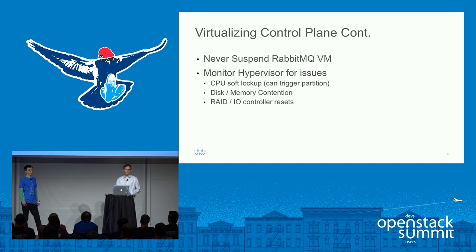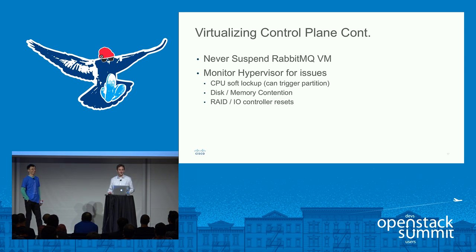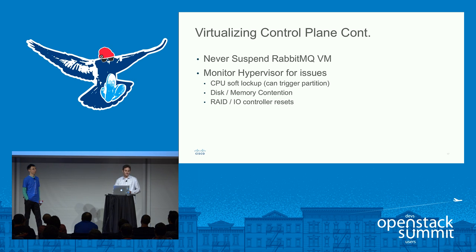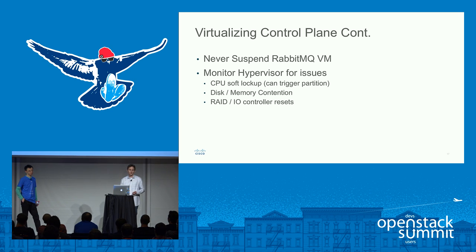Some other things to keep in mind if you're virtualizing a control plane: you never want to suspend a Rabbit VM, because when it actually resumes, it thinks it's still healthy and it will actually cause a partition. You also want to monitor the hypervisor for any underlying issues — pay attention to anything like a CPU soft lockup, disk or memory contention, or RAID or IO controller resets, because all of these can cause a little skip in the underlying VM and then all of a sudden it's out of sync with the cluster.